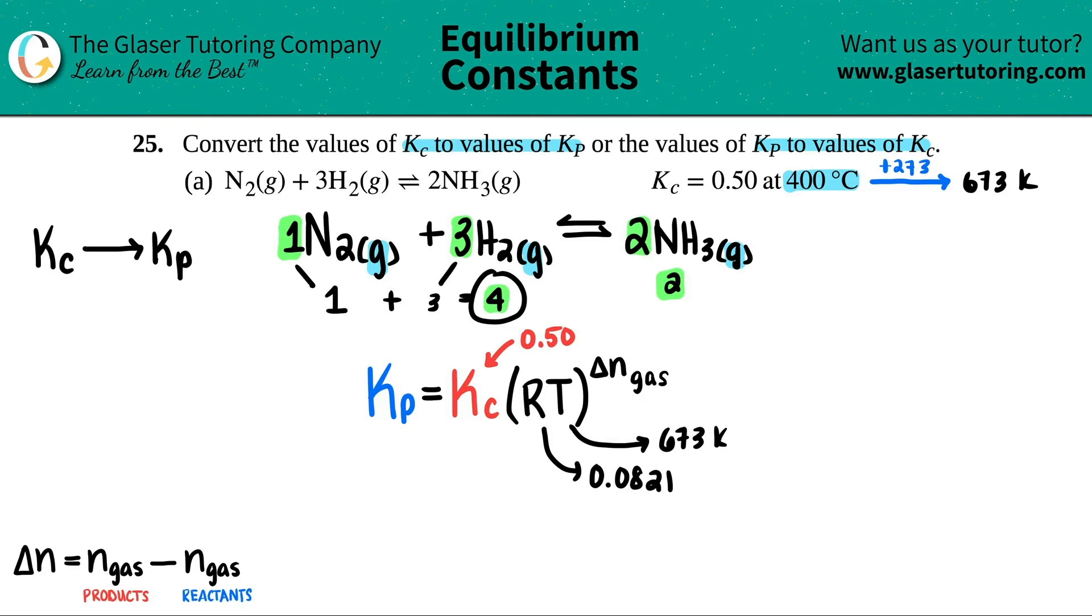So I have four total moles for the reactant side. I got two total moles for the product side. Remember, delta n is products minus reactants, so the delta n gas, the number that we're going to raise it to, is two minus four, product minus reactant. So this would be a negative two. And that's totally okay - you can get negative values for that exponent.